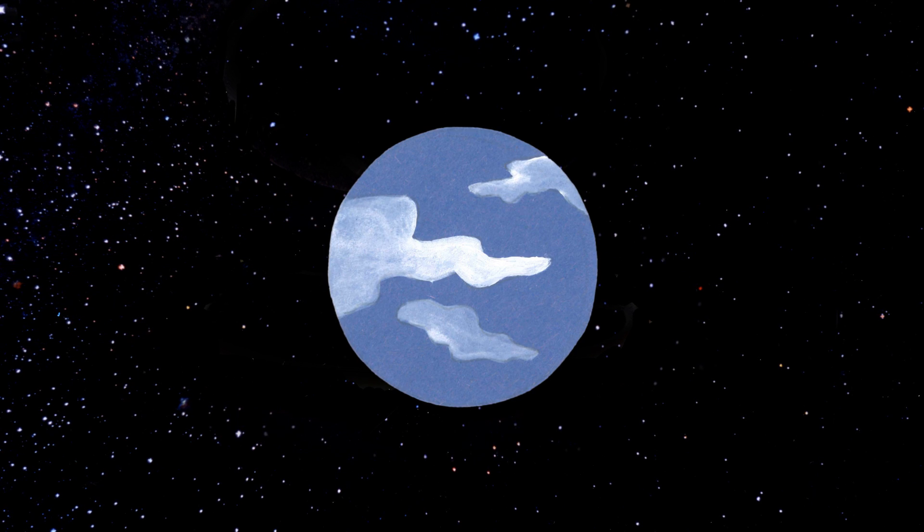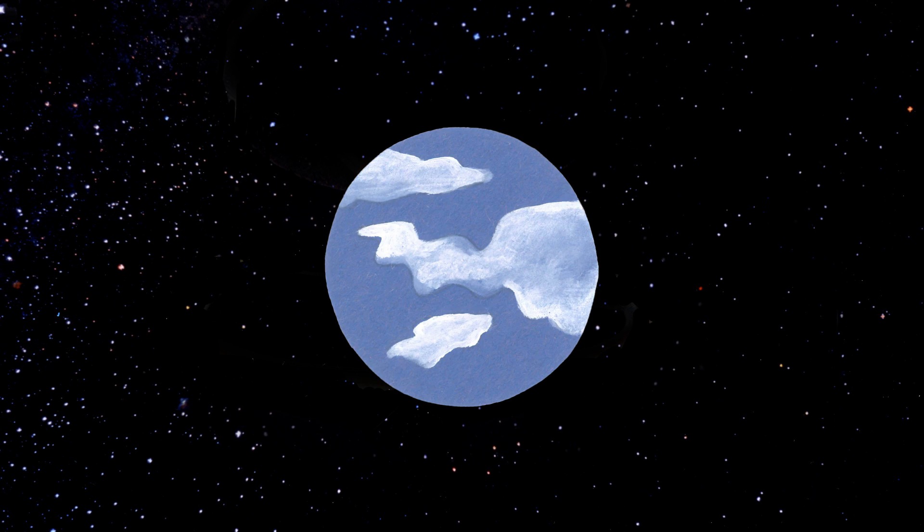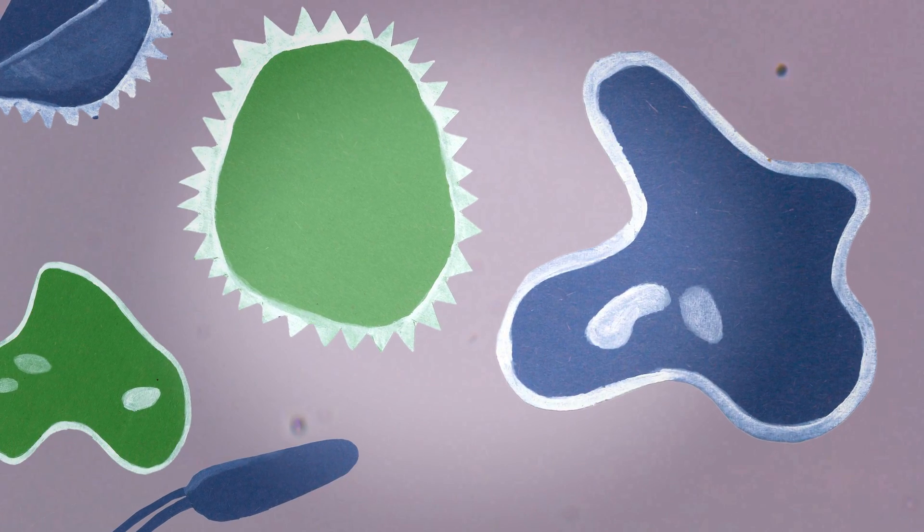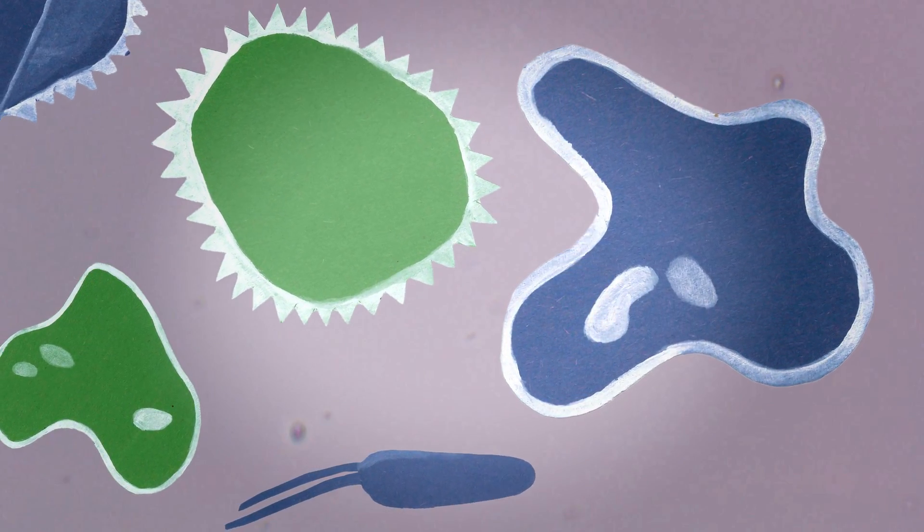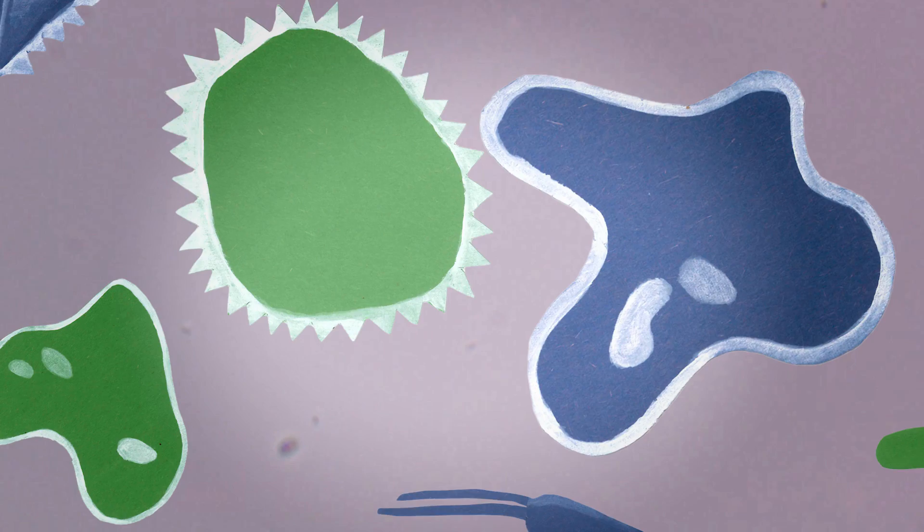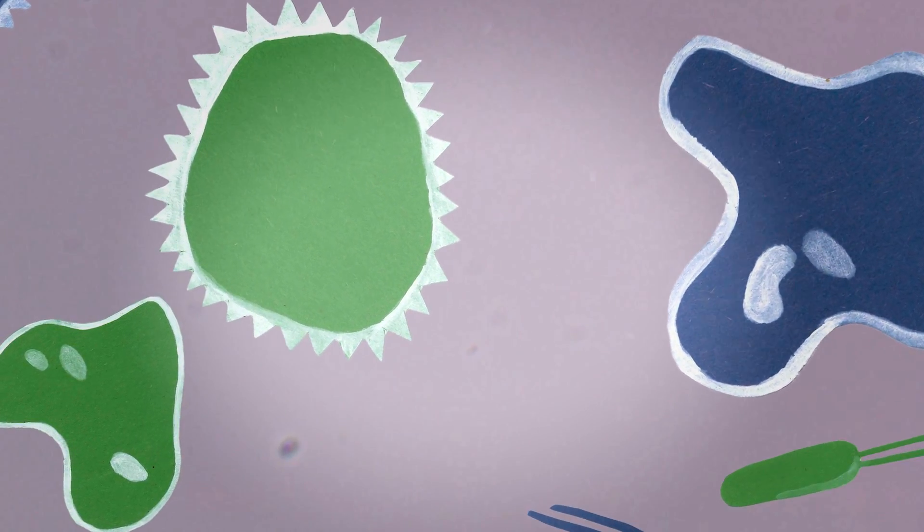Probably the first sense that any organism on this planet evolved was a sense of touch or a sense of pressure on a cell. Of course, single cells don't have nervous systems, but they need to know when something's coming into contact with them.